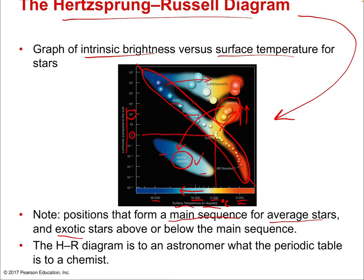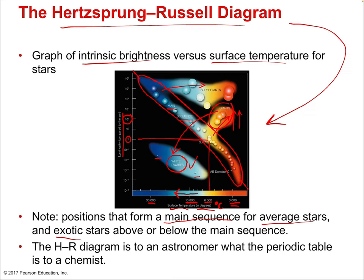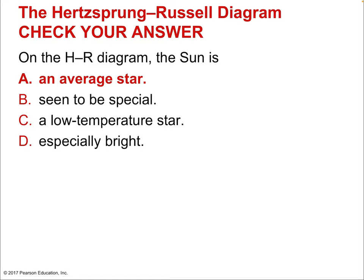The HR diagram is to an astronomer what the periodic table is to a chemist. On the HR diagram, the sun is an average star — right in the middle of the main sequence. The fact that it's on the main sequence at all makes it average. It's a common type of star in the galaxy. A dying star that has collapsed and is cooling off appears in the lower left of the HR diagram — that's where white dwarfs are.